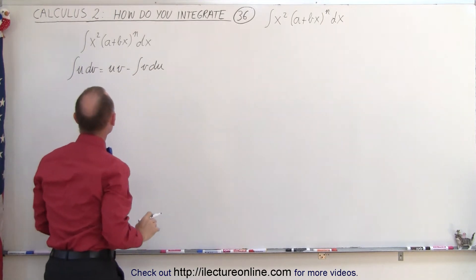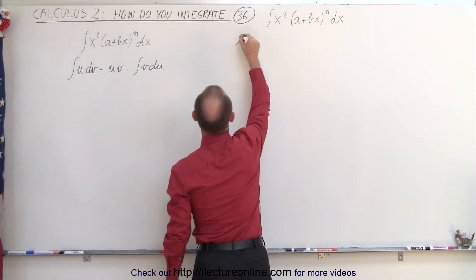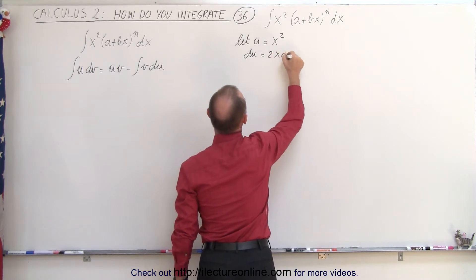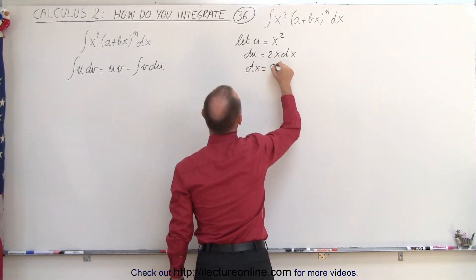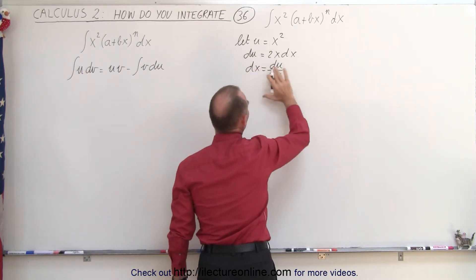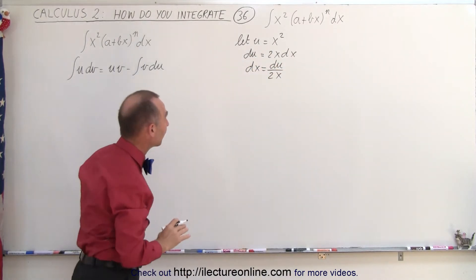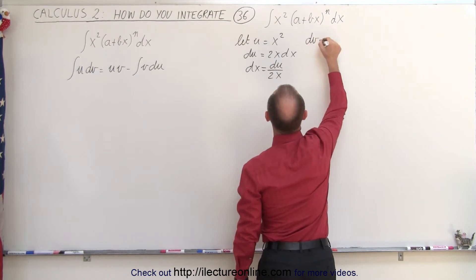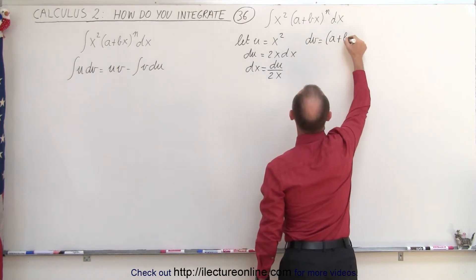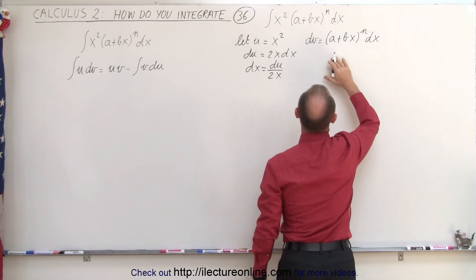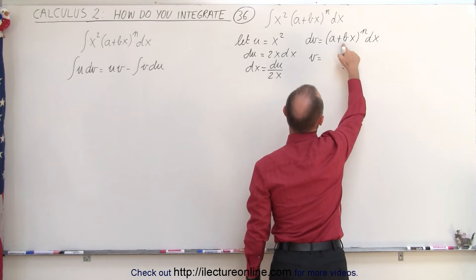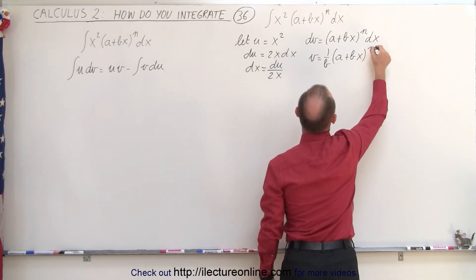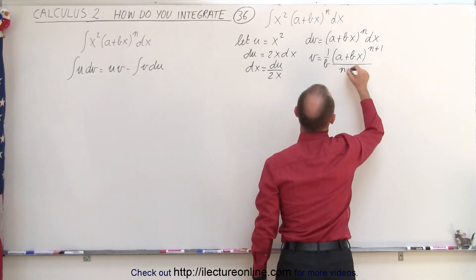We have to pick the proper u and v's. So if we let u equal x squared, then du is equal to 2x dx. Then dv is equal to a plus bx to the n power dx. When we integrate that, v is equal to 1 over b times a plus bx to the n plus 1 power, divided by the new exponent n plus 1, and then the dx drops out.